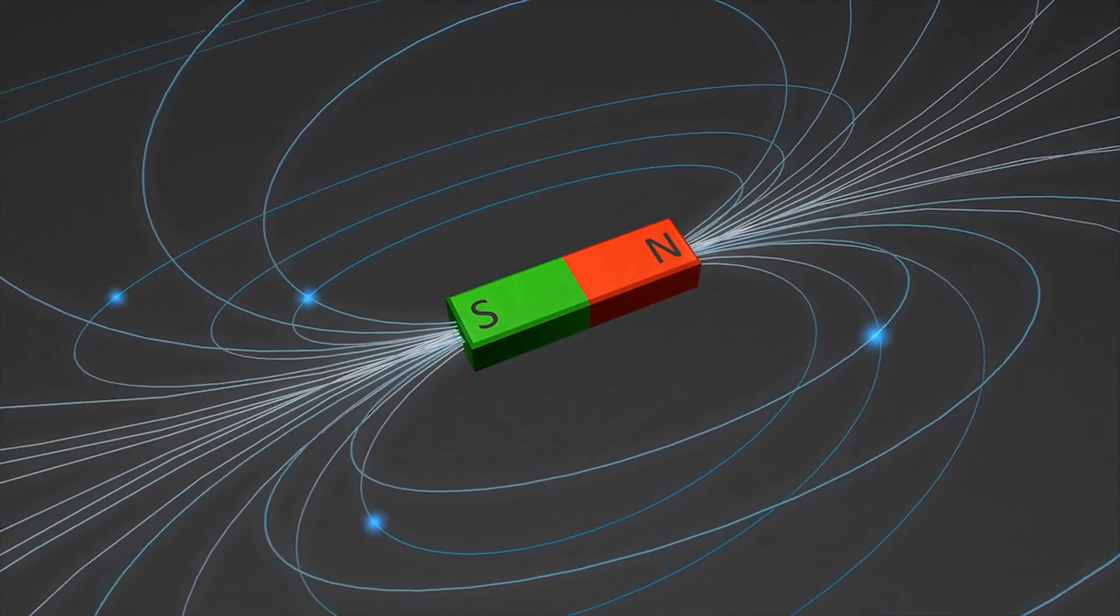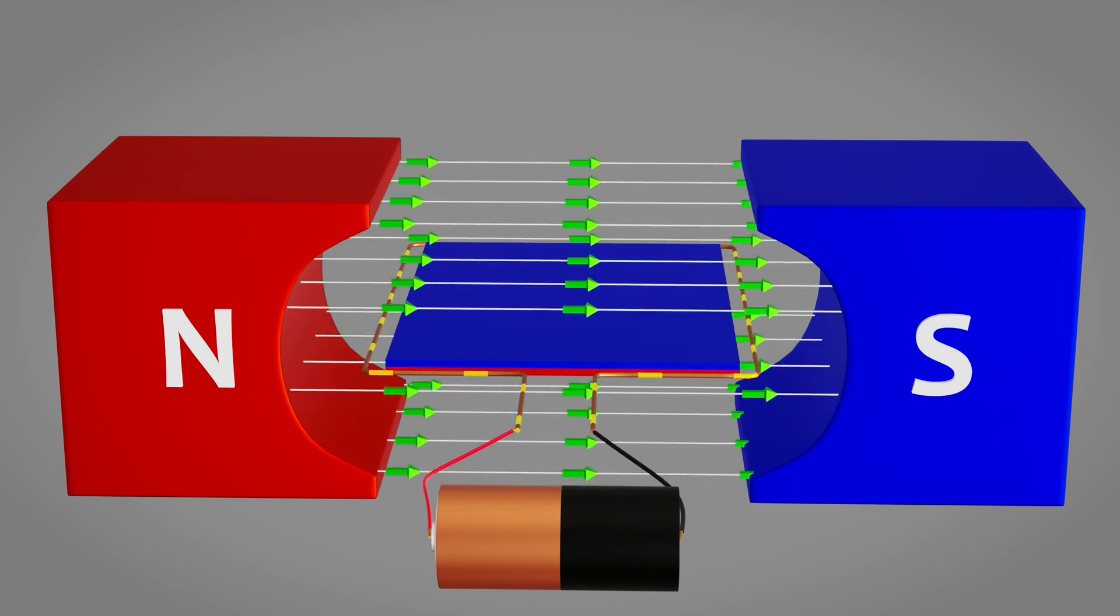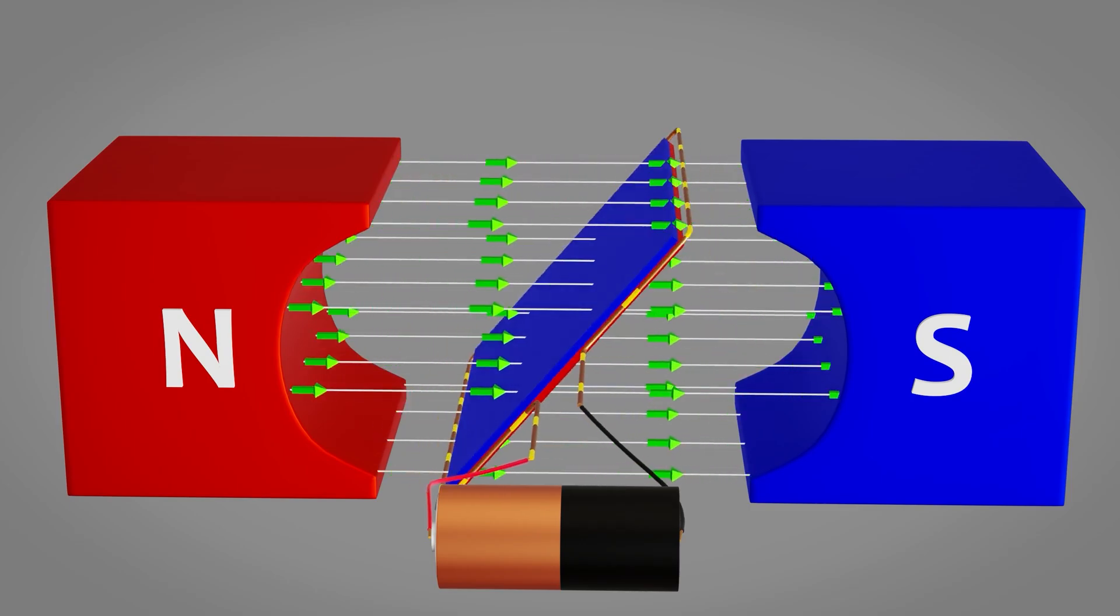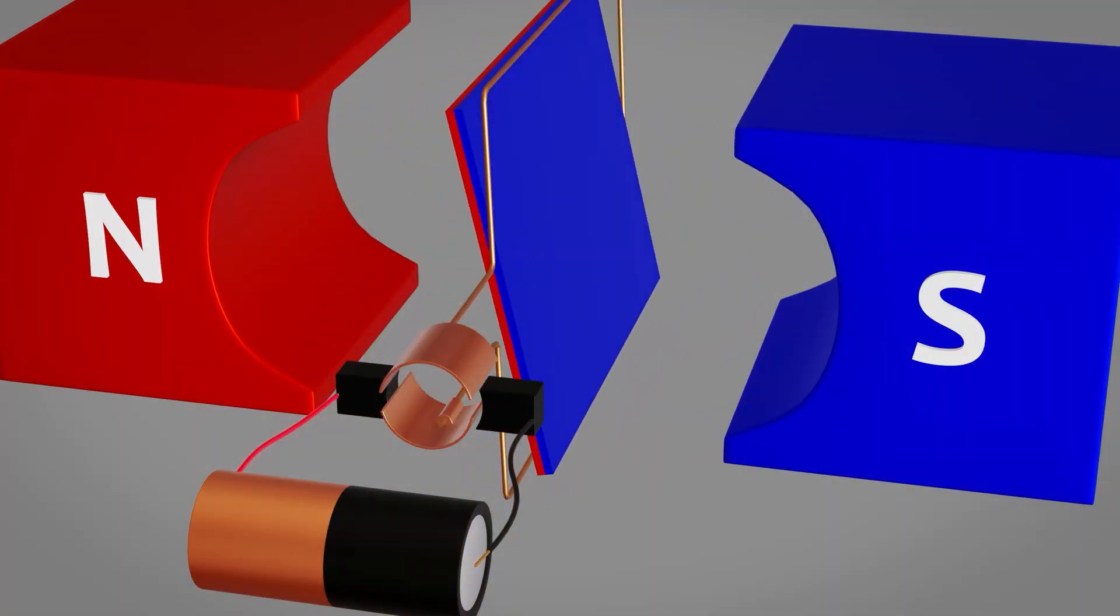So far, we've learned about how electricity creates a magnetic field, and how magnets can either attract or repel each other, depending on their poles. But here's where it all comes together.